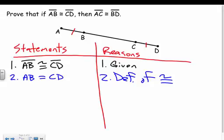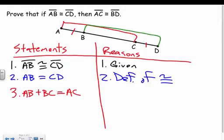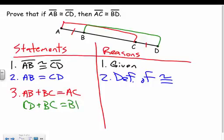This is the postulate we just talked about. If I take AB and add BC, that equals AC. And if I take CD and add BC to it, I get the whole thing — CD plus BC equals BD. So I can write: AB plus BC equals AC, and CD plus BC equals BD. The nice part is that AC and BD are exactly what I'm trying to prove congruent.